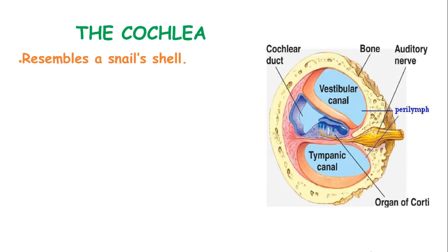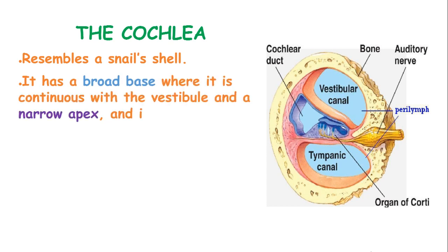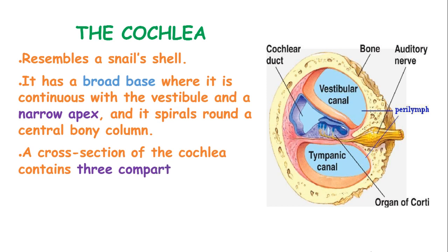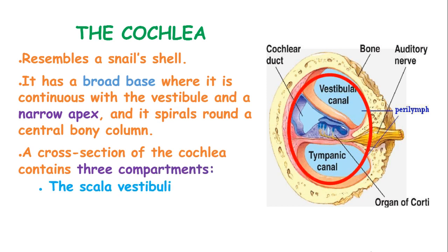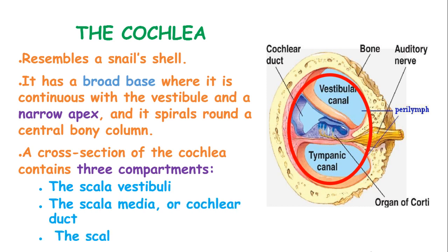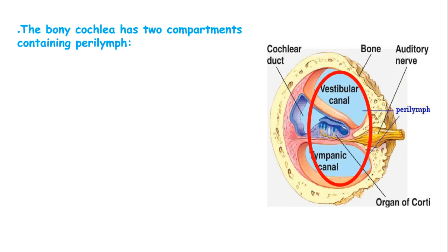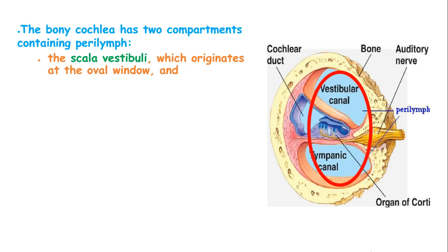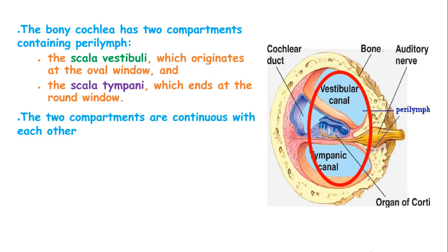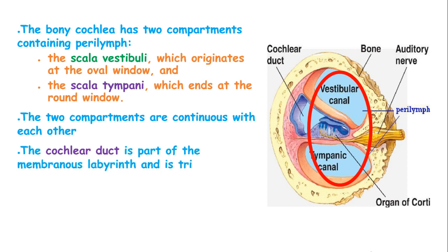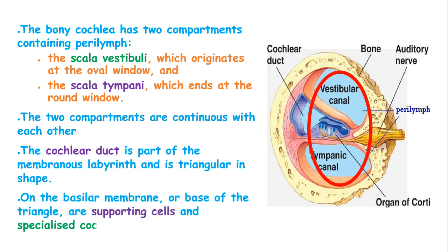The cochlea resembles a snail's shell. It has a broad base where it is continuous with the vestibule and a narrow apex, and it spirals around a central bony column. A cross-section of the cochlea contains three compartments: the scala vestibuli, the scala media or cochlear duct, and the scala tympani. The bony cochlea has two compartments containing perilymph — the vestibular canal or scala vestibuli, which originates at the oval window, and the scala tympani or tympanic canal, which ends at the round window. These two compartments are continuous with each other. The cochlear duct is part of the membranous labyrinth and is triangular in shape. On the basilar membrane, which forms the base of the triangle, there are supporting cells and specialist cochlear hair cells which contain auditory receptors.